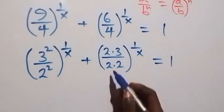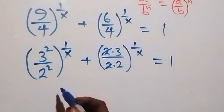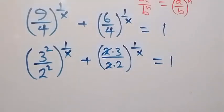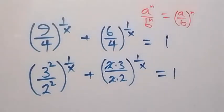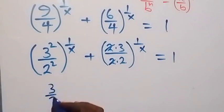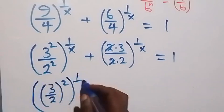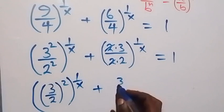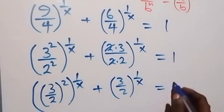This comes to each other, giving us 3 over 2. Applying the same laws of indices, the power here is common. So we have (3 over 2) all squared, then raised to power 1 over x. Plus (3 over 2) raised to power 1 over x. Now it equals 1.